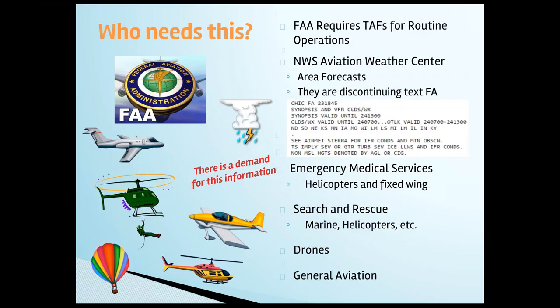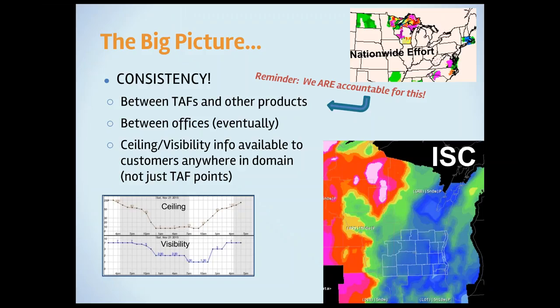The aviation weather center will also have a lot of use for aviation weather grids because they're continuing their text products, and the gridded aviation will play right into it. There's widespread demand for this information for getting aviation weather forecasts at points between our regular task sites. Emergency medical services, search and rescue are big users, and the drone community is growing, as is general aviation. The big picture for this DOS initiative is consistency — consistent products between our public products.